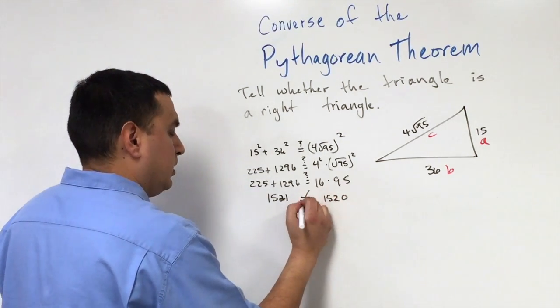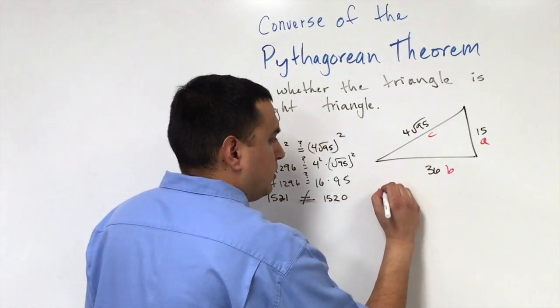So they are not equal, which means that this is not a right triangle.